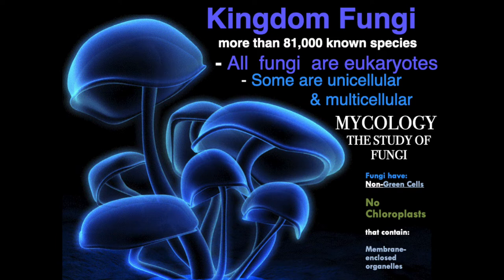Now we're going to talk about Kingdom Fungi. There are more than 81,000 known species of fungi. All fungi are eukaryotic cells, meaning they have a nucleus. Some are unicellular, such as yeast, but the majority of fungi are multicellular.